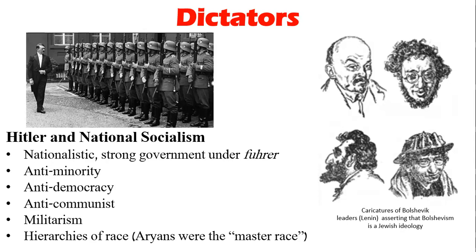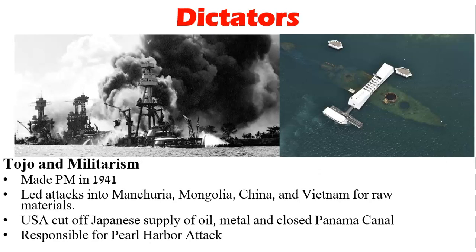For Tojo, he was made prime minister in 1941. He led attacks into Manchuria, Mongolia, China, and Vietnam for their raw materials, much like the West had done before. The U.S. cut off Japan's supply of oil and metal — Roosevelt ordered the U.S. to freeze all Japanese assets in the United States, closed the Panama Canal to Japanese shipping, and forbade the export of oil, iron, and rubber to Japan. Tojo is essentially responsible for the Pearl Harbor attack.